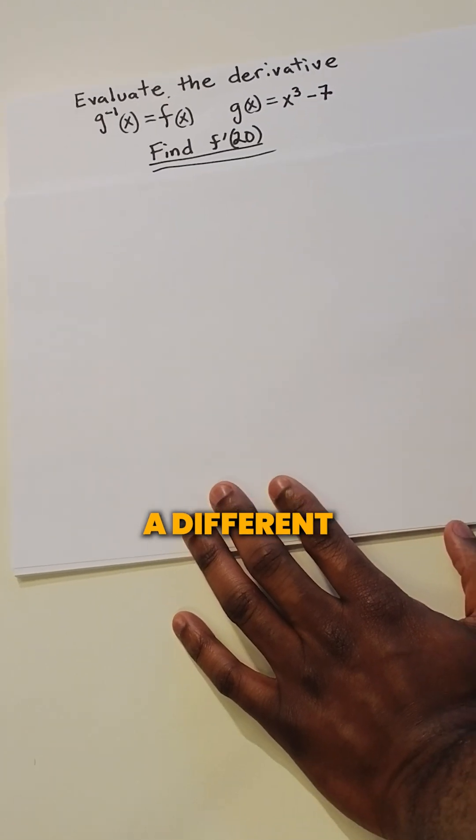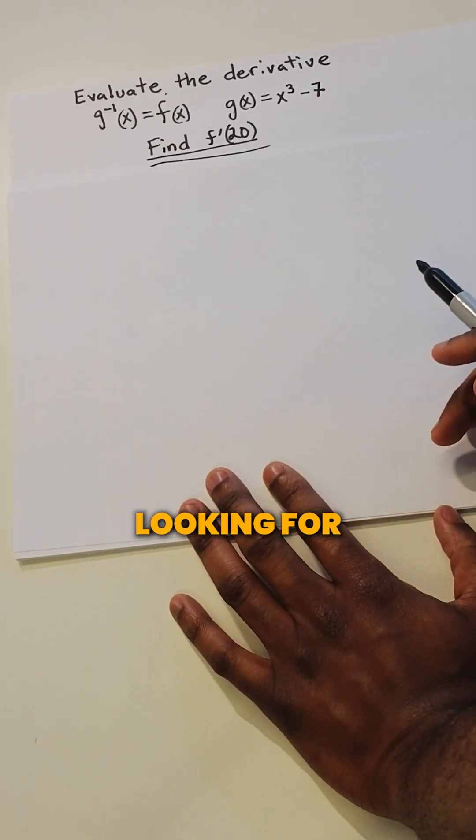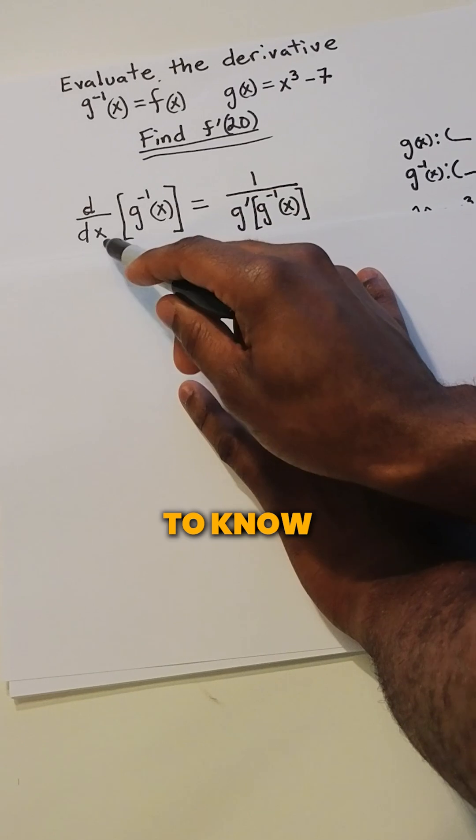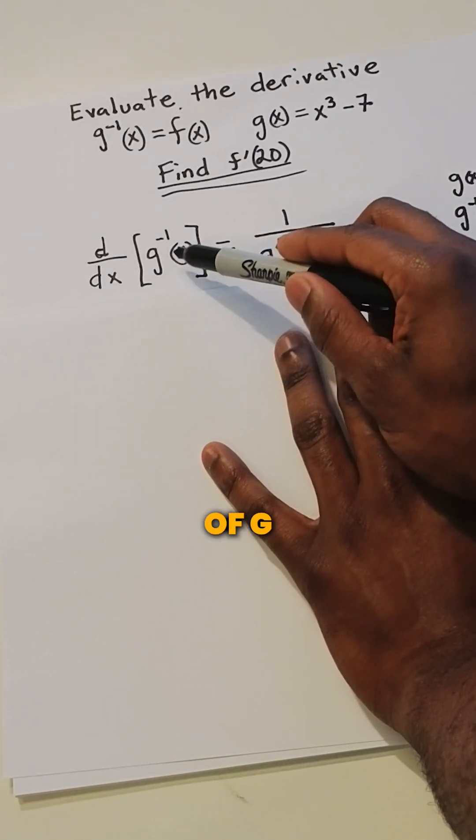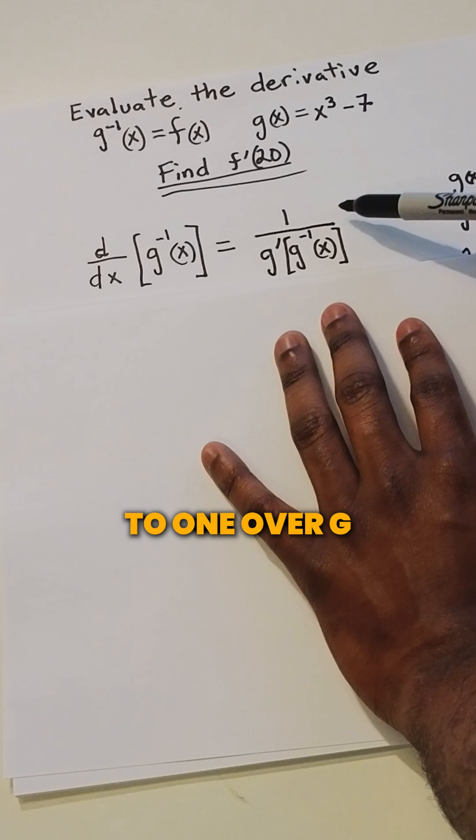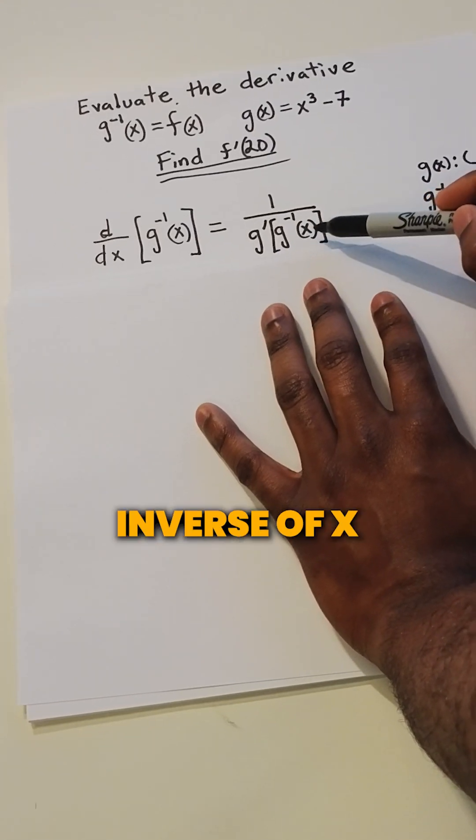You must know that there's a different equation if we're going to be looking for f prime of 20. So the first thing we need to know is our equation for inverse derivatives. The derivative of g inverse of x is equal to 1 over g prime of g inverse of x.